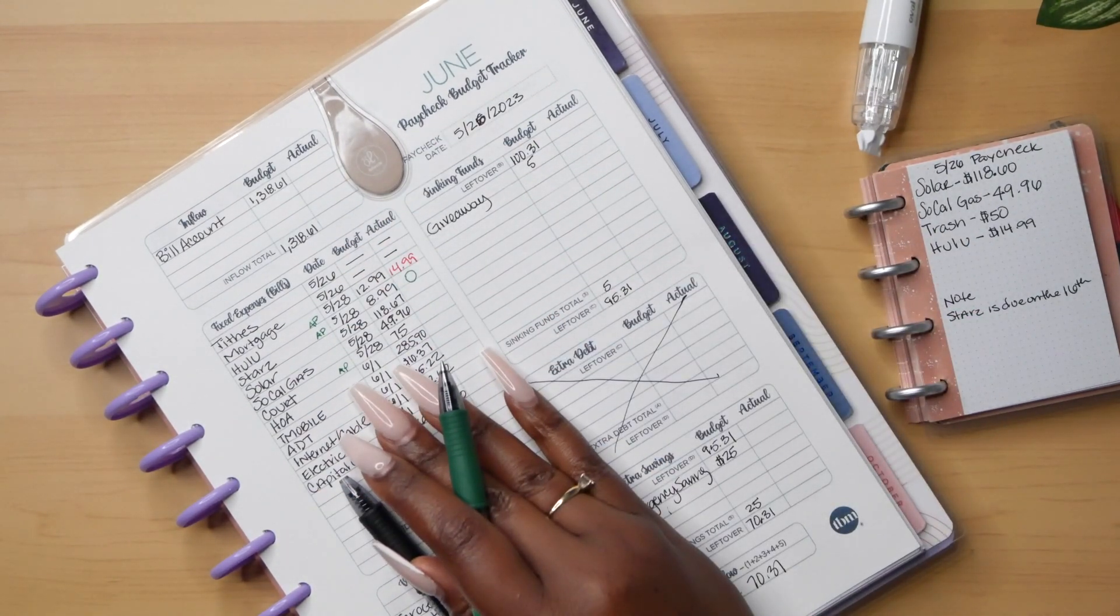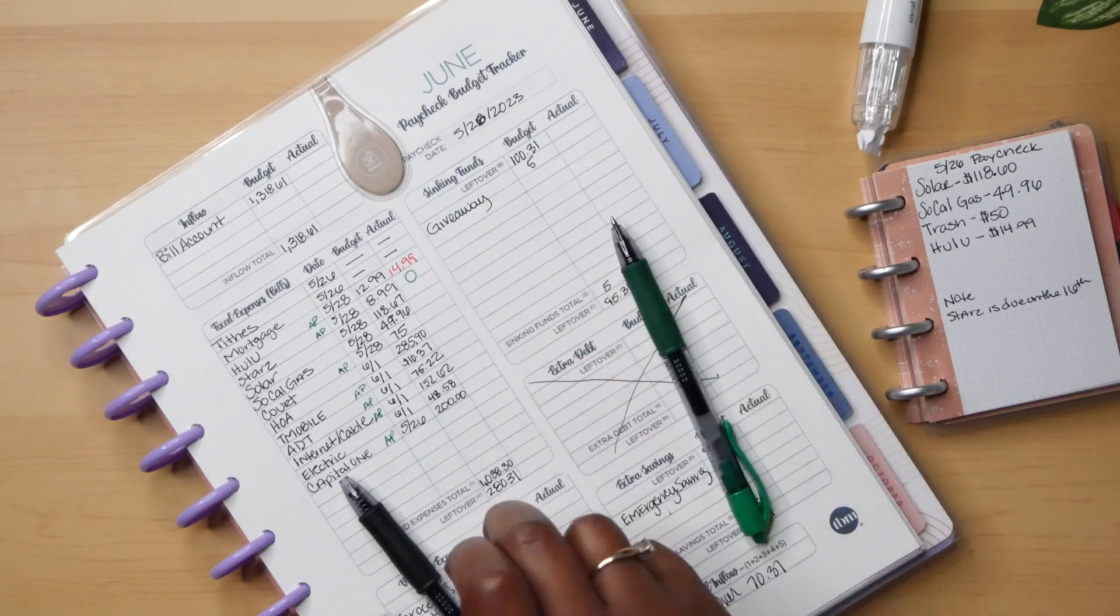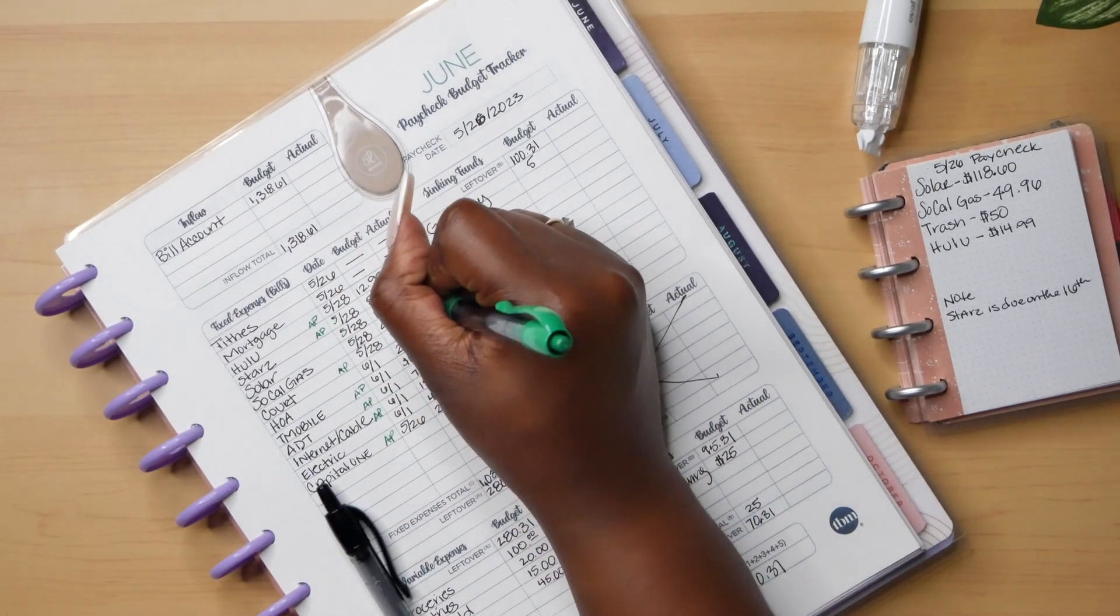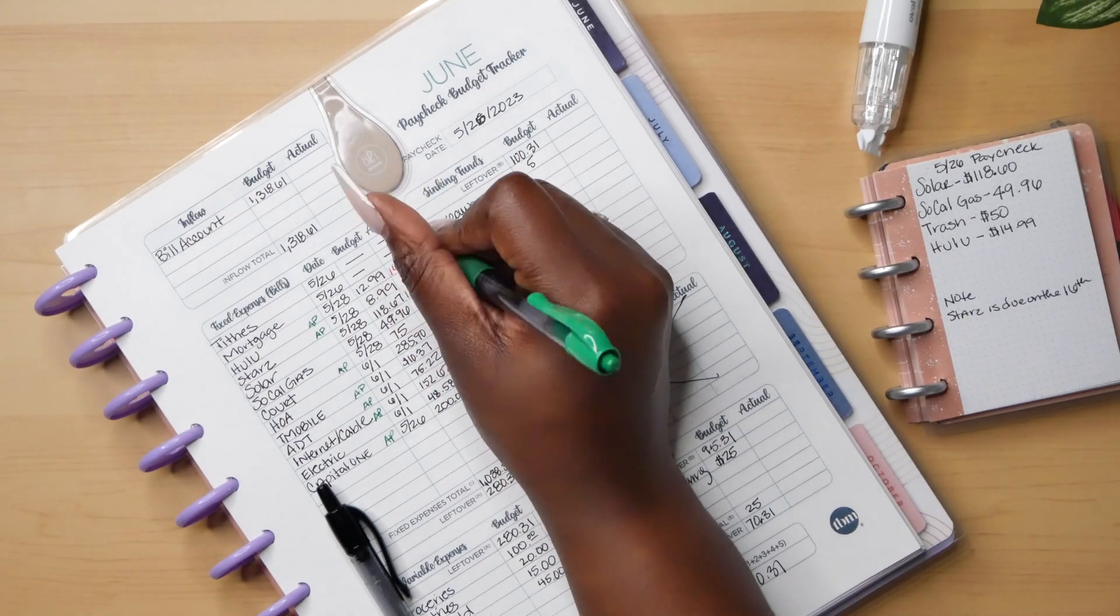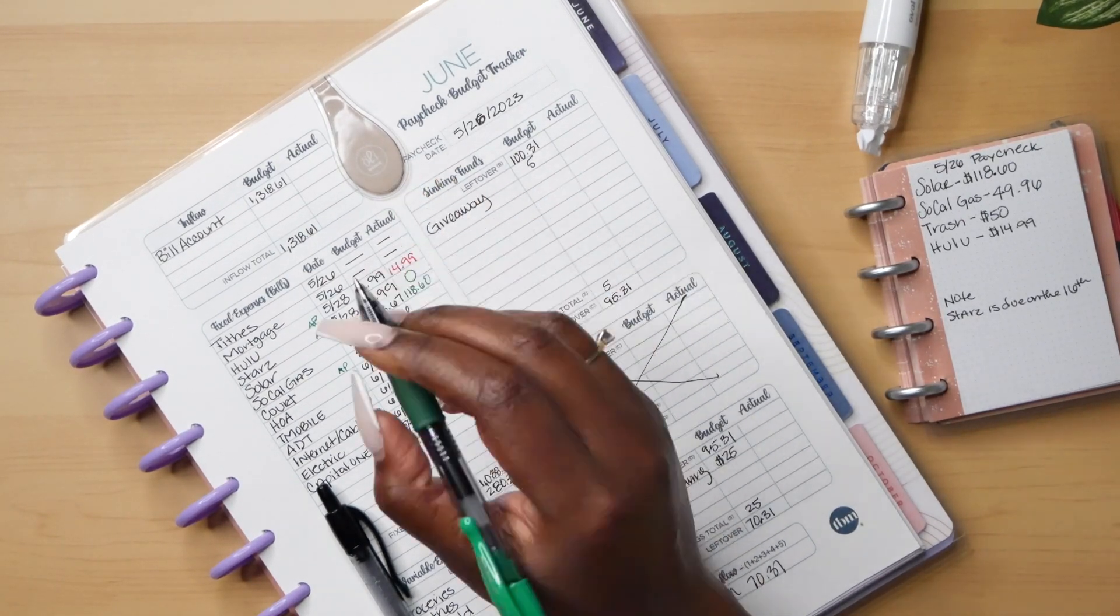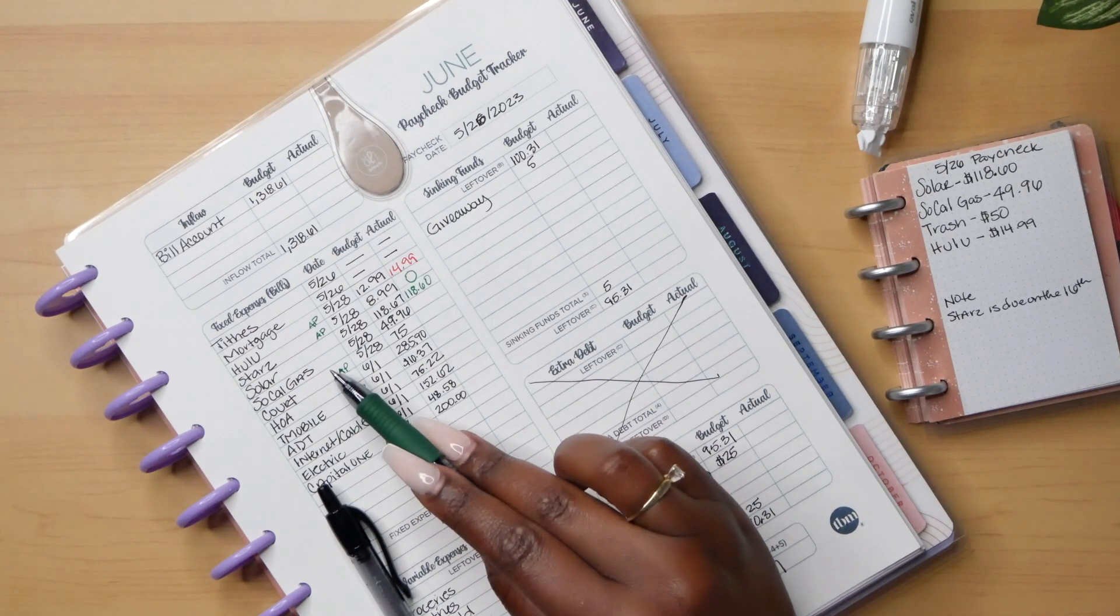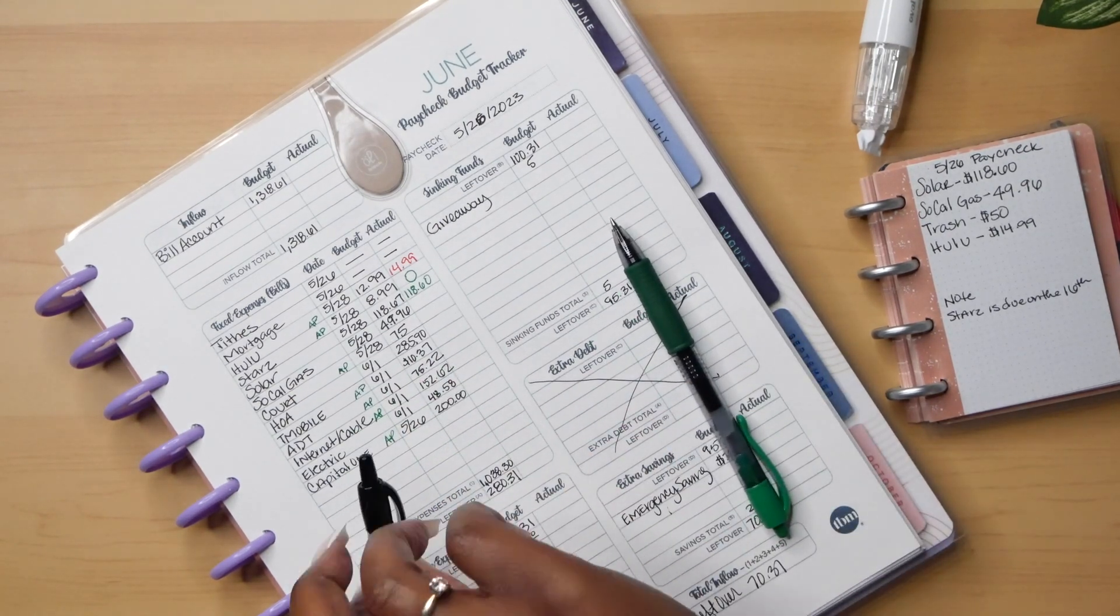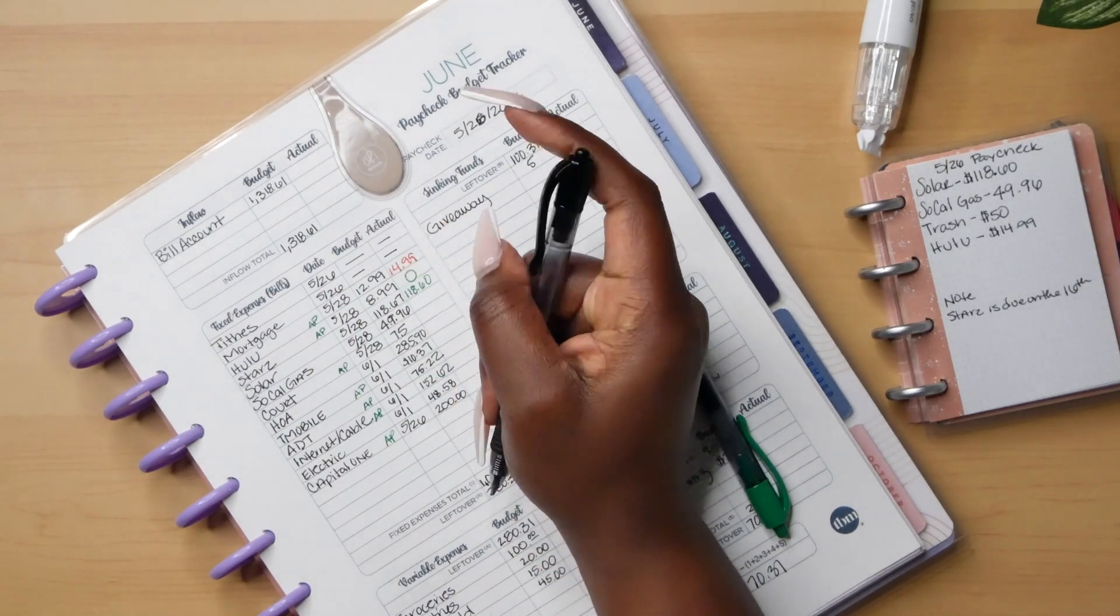Solar, our solar bill came in at $118.60. So that's actually in green. We will take that 7 cents. Yes, we will. And for SoCal Gas, we came in at $49.96. So we came in right on target there.